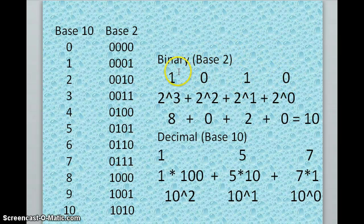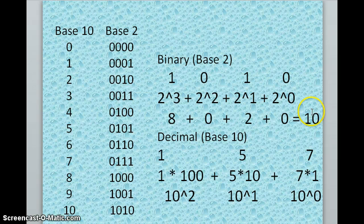So you have zero plus two plus zero plus eight, making ten. So that's a really easy way of converting from base 2 to base 10.